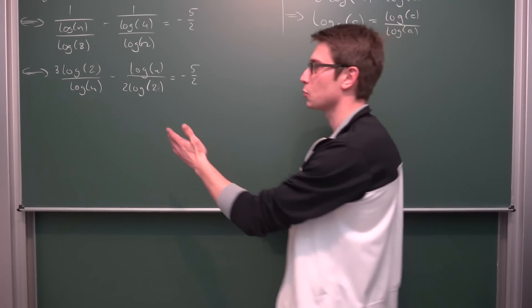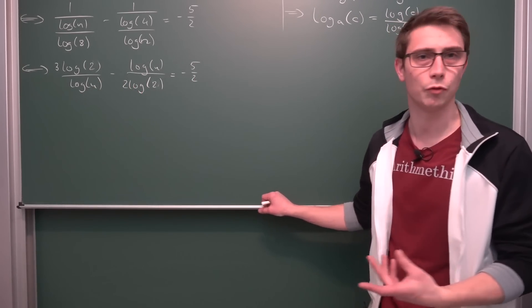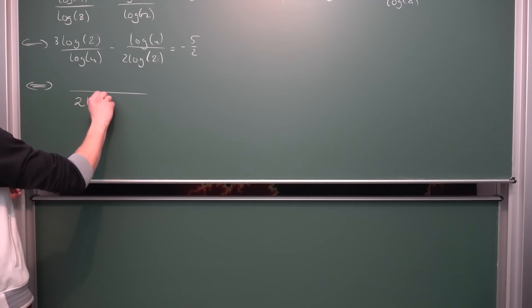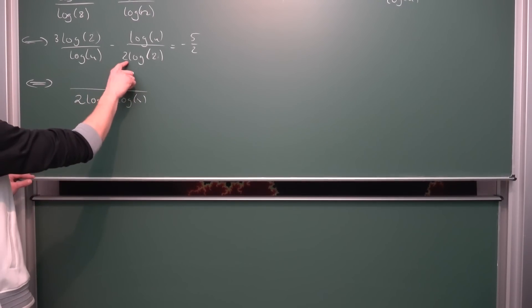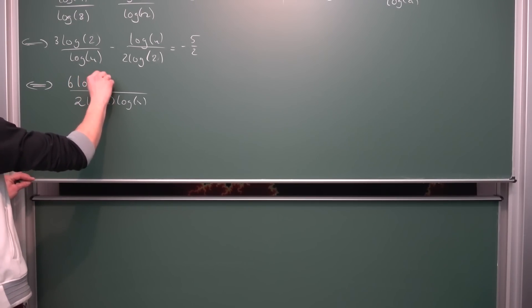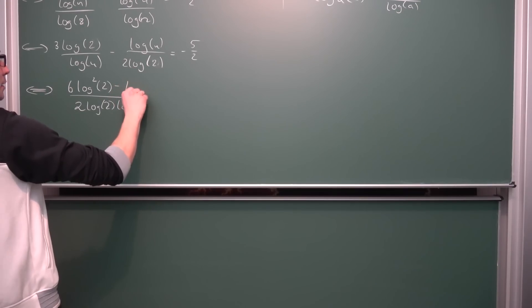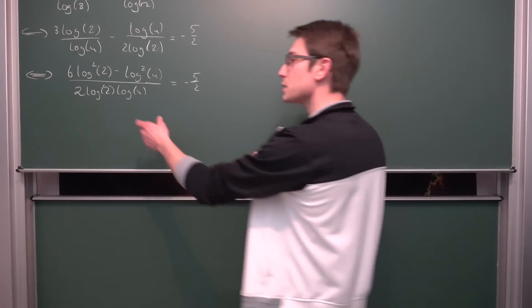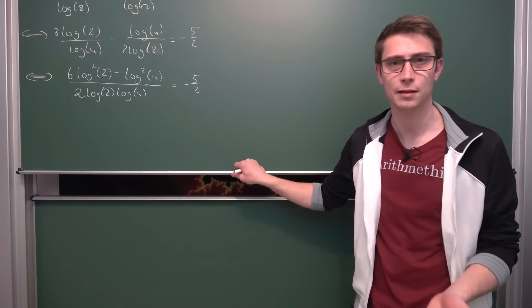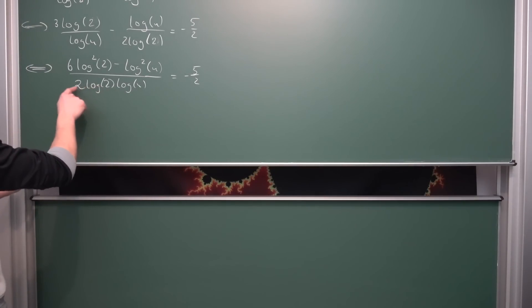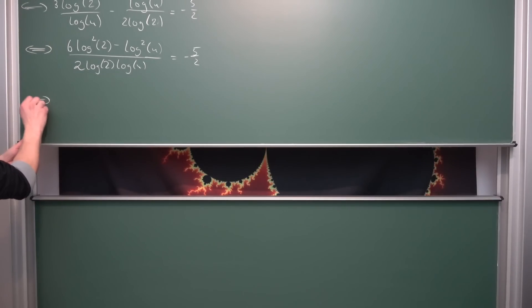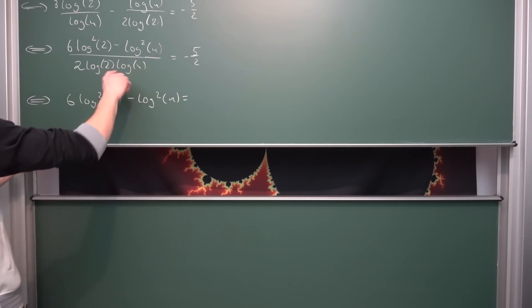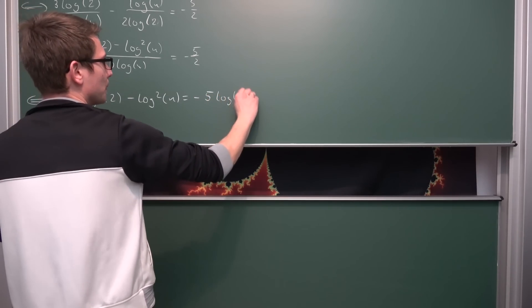Now we are just going to bring everything onto the same denominator and then we are going to solve for the log of n. The common denominator is going to be 2 times the natural log of 2 times the natural log of n. Also 2 times 3 is 6, so 6 times log of 2 squared minus log of n times log of n is the natural log of n squared, and all of this is equal to negative 5 over 2. Now under the condition that the denominator is not equal to 0, we can multiply both sides by it, meaning n must not be equal to 1. Multiplying both sides, getting rid of the 2 and the 1 half gives us 6 times the natural log squared of 2 minus the natural log squared of n is equal to negative 5 times the log of 2 times the log of n.